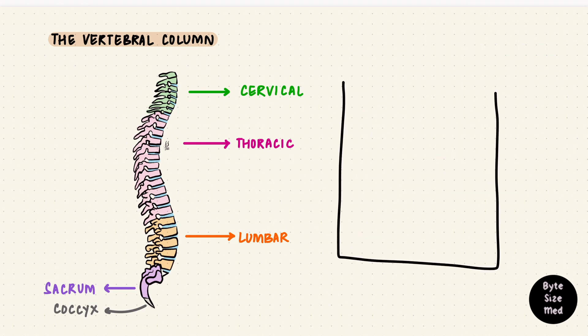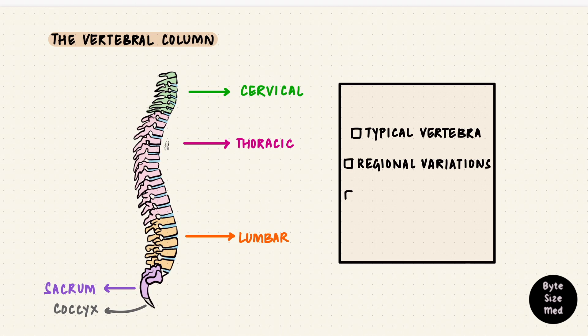I found the best way to study the vertebral column is to first learn how a typical vertebra looks, then the variations in each region, put them all together with the joints and ligaments in between, and then learn how they develop. This is part one, and it's on the structure of a typical vertebra.